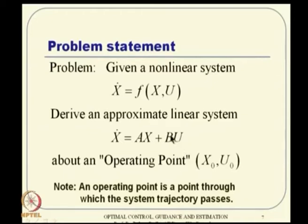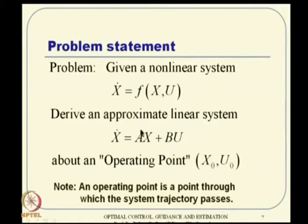If the operating point is an equilibrium point, then A and B will be constant matrices, giving you a linear time-invariant system. If it is a stable system, ultimately the trajectory will come and sit at the equilibrium, so that is also a valid operating point. The key point to note is: even though we use the same state notation X and U, when talking about linear systems, by definition this state is actually the deviation state and this control is actually the deviation control.